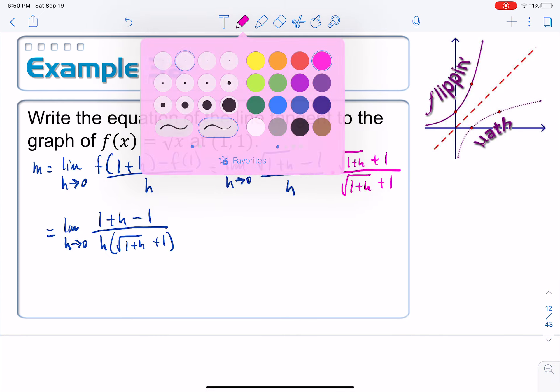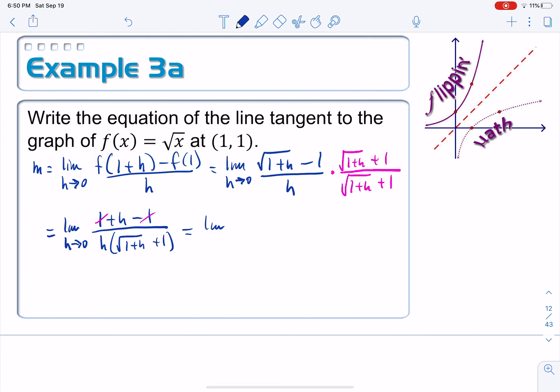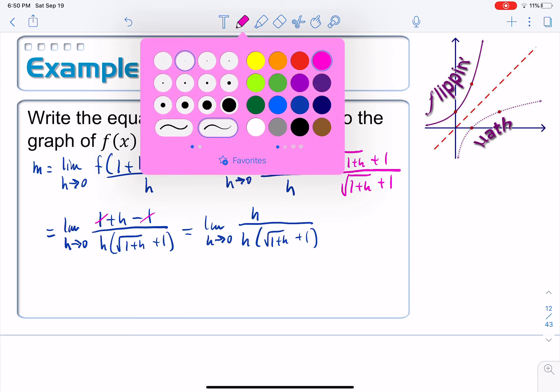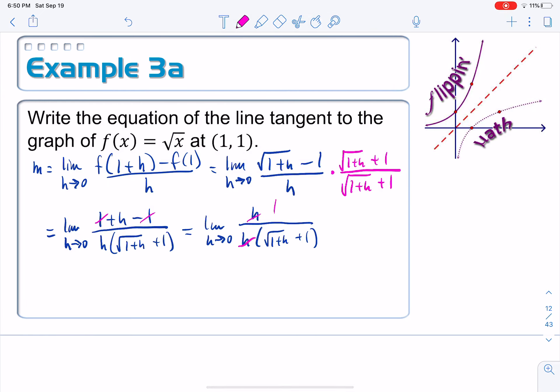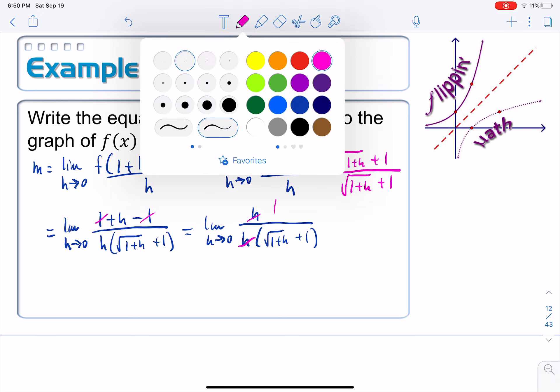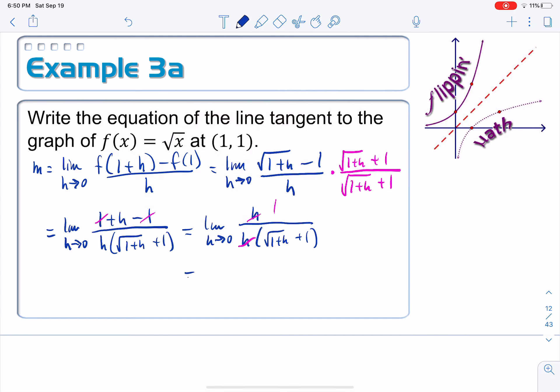Alright. So the limit as h goes to 0. Multiplying the two square roots together, I just get 1 plus h and then minus 1 times 1 minus 1. And we like to keep the bottom in factored form. So h times square root of 1 plus h plus 1. On the top, stuff cancels. Another stuff is going to cancel too. Just wait for it. So this h on the top and this h on the bottom, they're going to cancel.